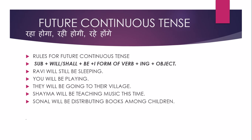उदाहरण: Ravi will be sleeping — रवि अभी भी सो रहा होगा। Shama, you will be playing — तुम खेल रहे होंगे। They will be going to their village — वे अपने village जा रहे होंगे। Shama will be teaching music this time — Shama इस time music पढ़ा रही होगी। Sonal will be distributing books among children — Sonal बच्चों के बीच books distribute कर रही होगी।